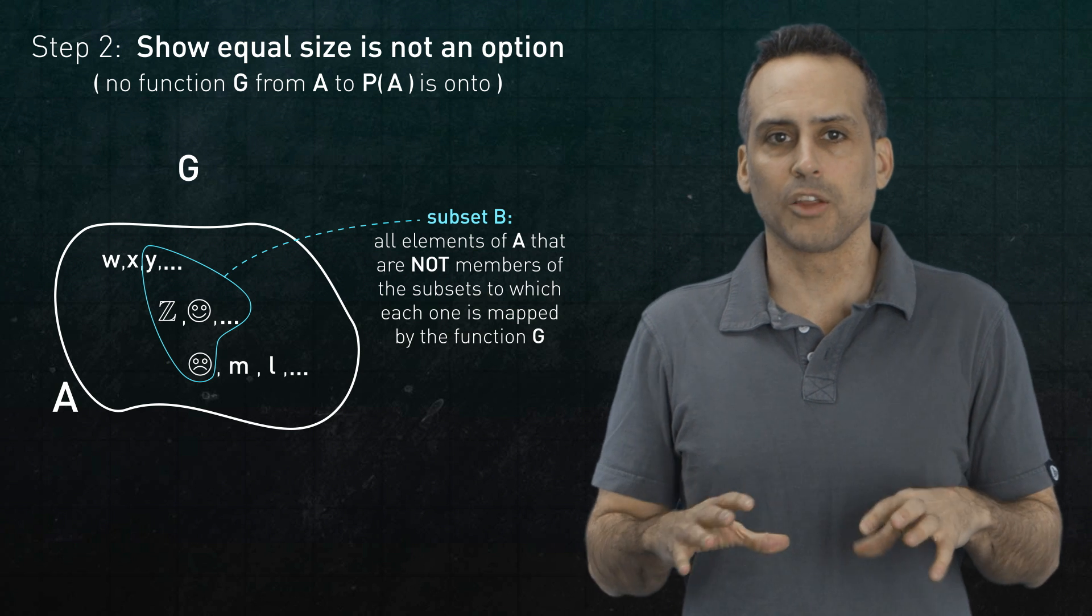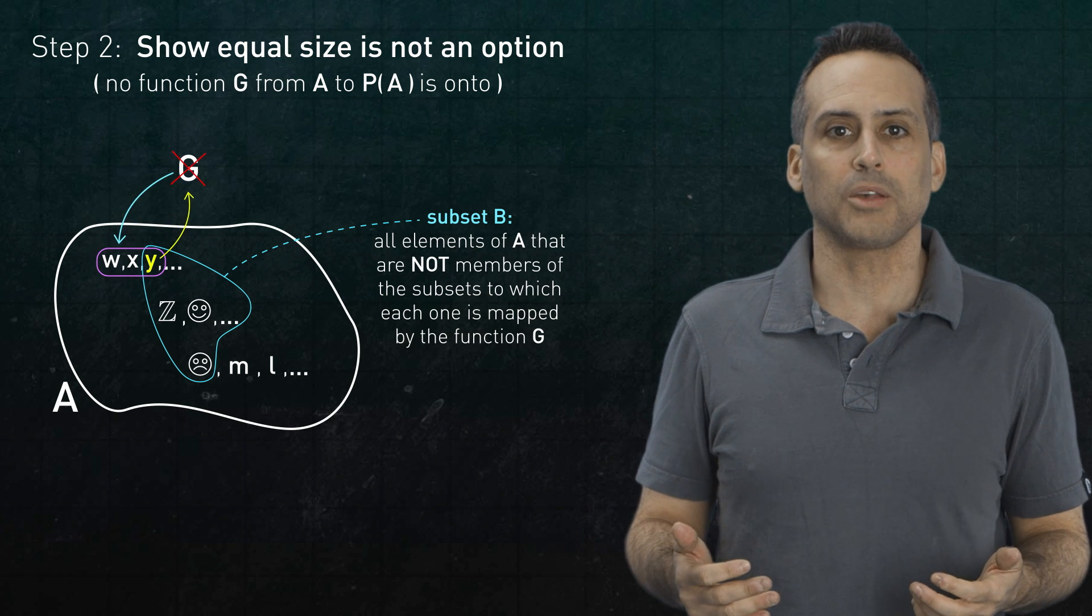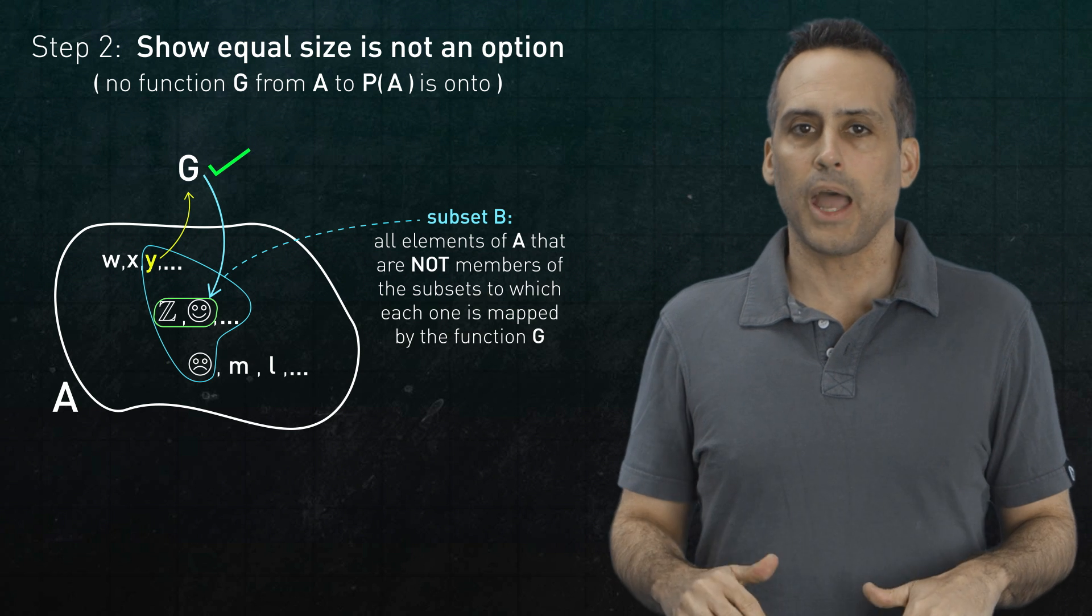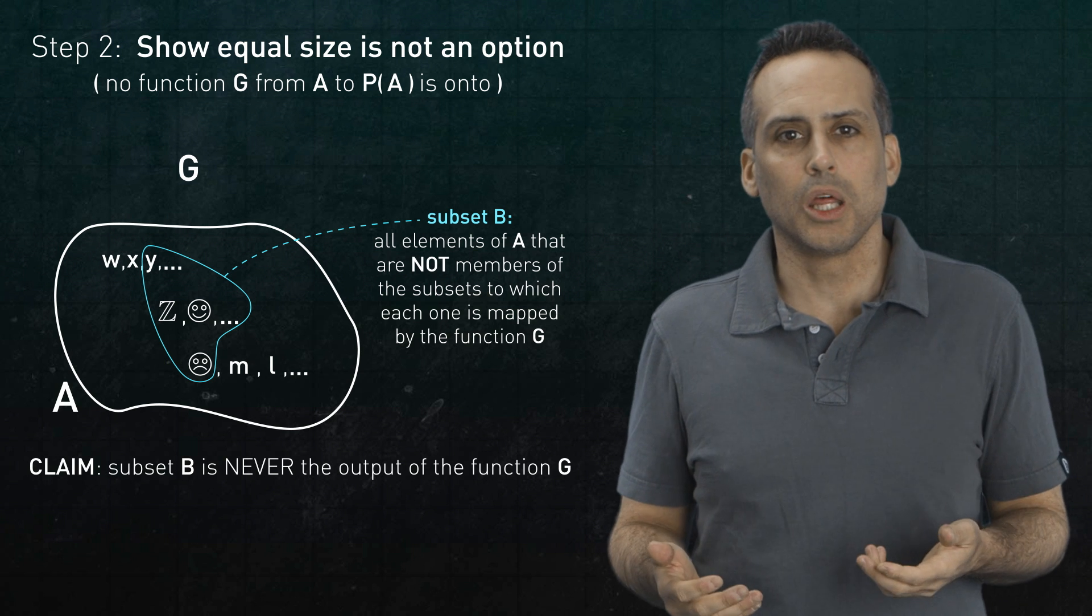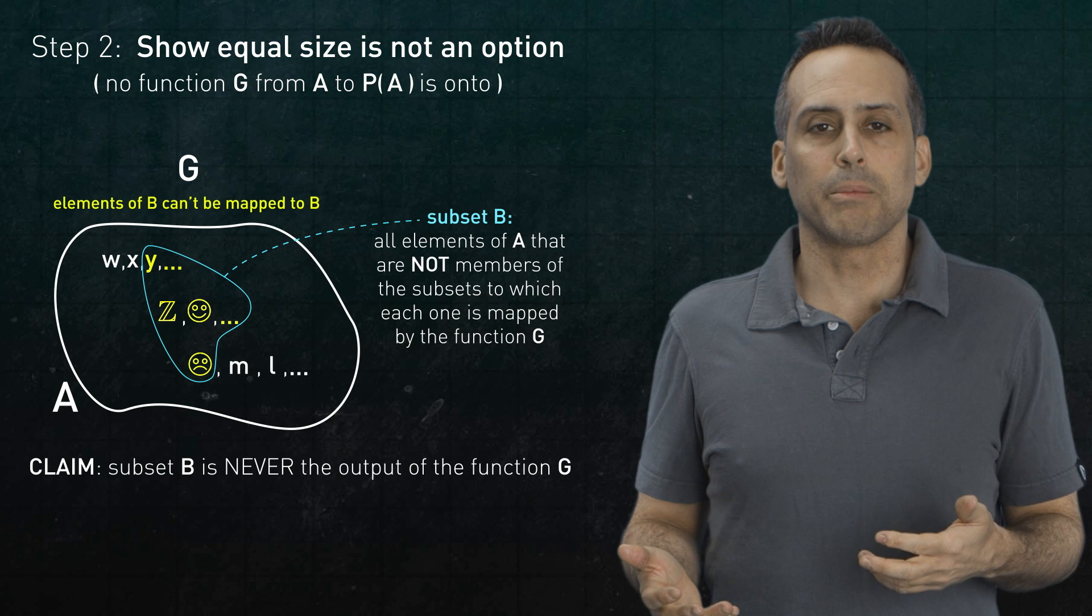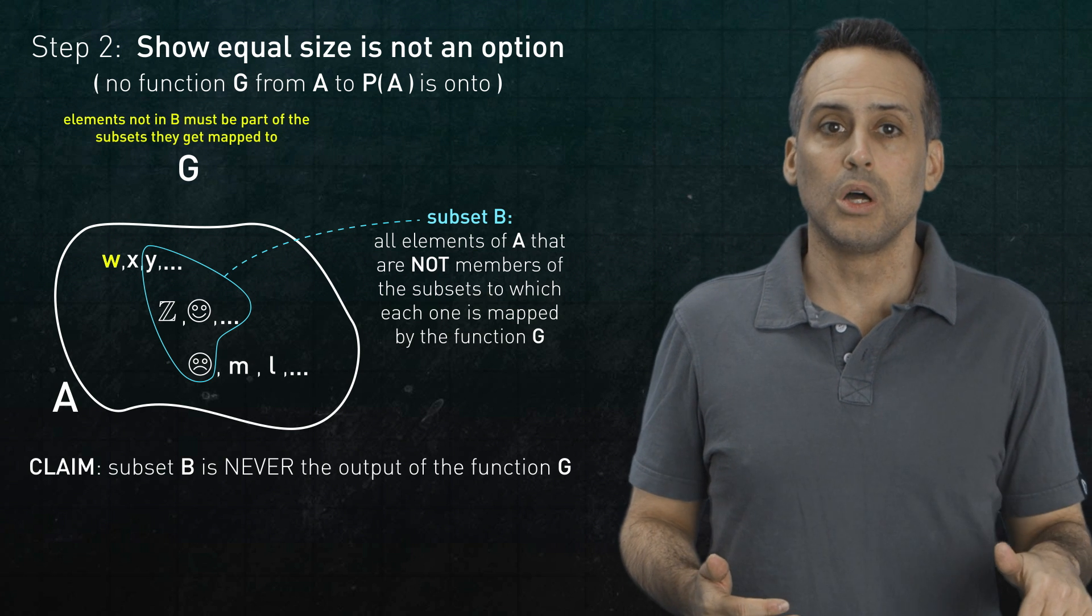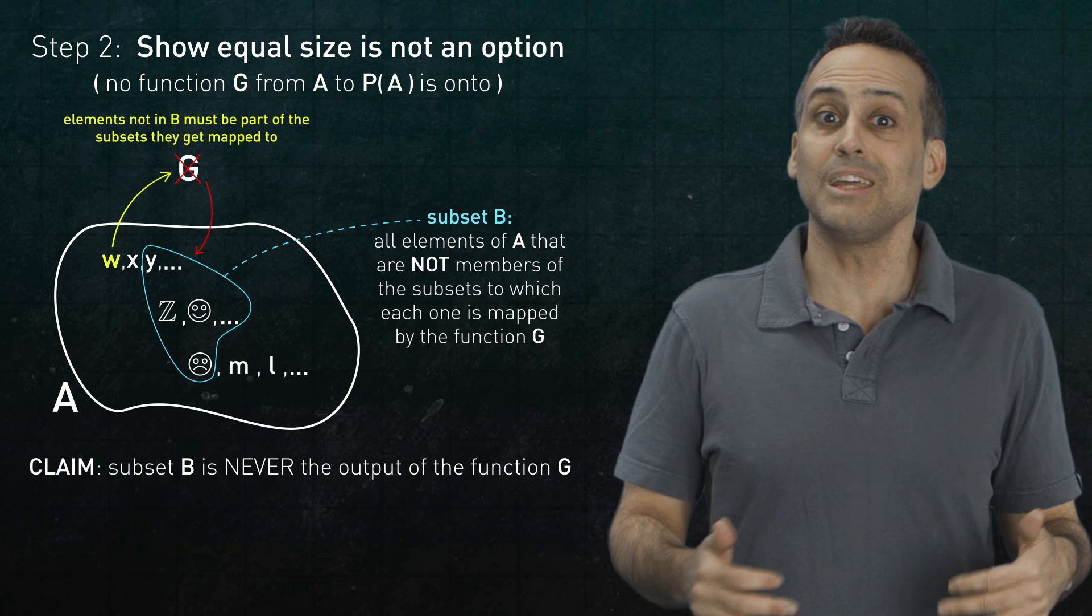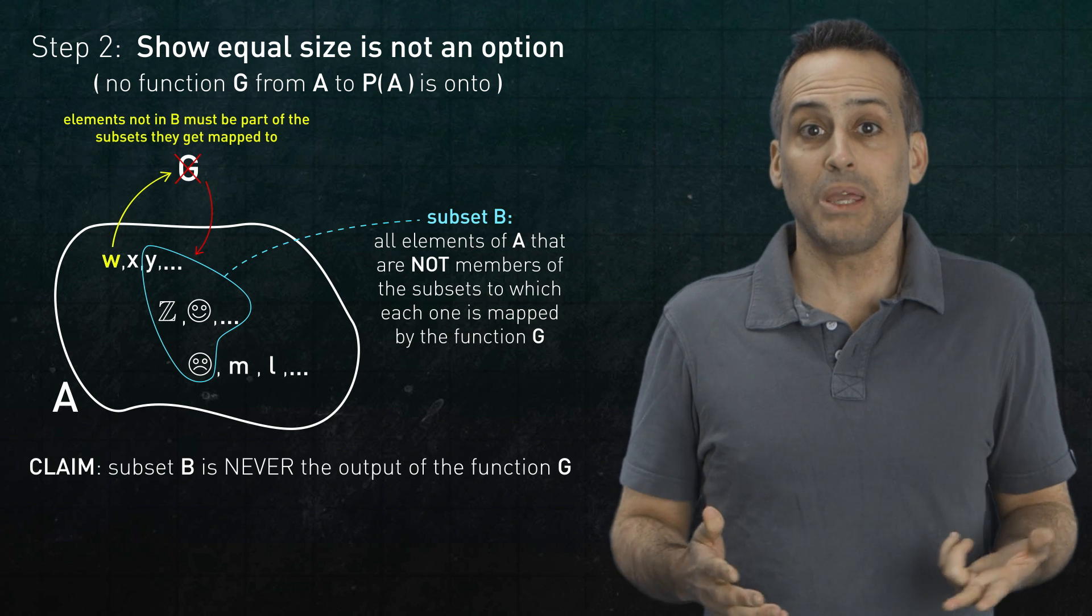To illustrate, suppose that element Y is in B. Then the G operation can't map Y to this subset, because Y is part of that subset. And it can't map Y to B, because Y is also part of that subset. But it could map Y to this other subset that Y isn't a part of. OK. Now I claim that the subset B will never be the output of G. Why? Because what input would produce it? I mean, we just saw that elements like Y that are in B can't get mapped to B because of how we define B. But what about an element like W that isn't in B? Well, since W isn't in B, then W has to be an element of whatever subset G maps W to. So G has to map W to a subset like this or like this. But it can't map W to B because W isn't in B. So the bottom line is that G can't map anything in B to B or anything that's not in B to B, which means B is never the output of the map G.